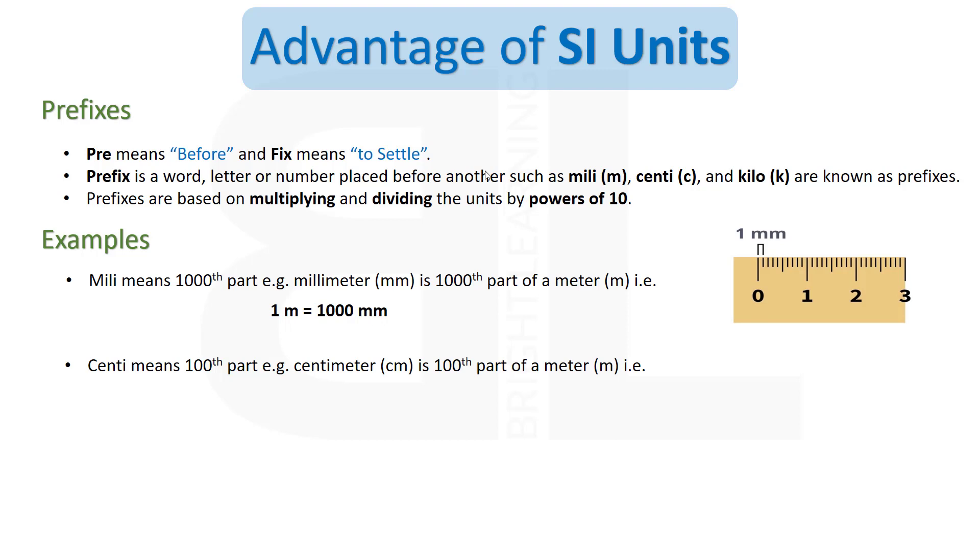Centi is another prefix that means hundredth part. So if we talk about one centimeter, that is the hundredth part of a meter, or we can say 1 m = 100 cm.